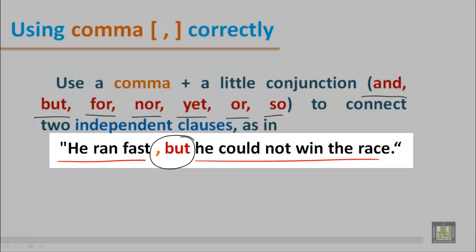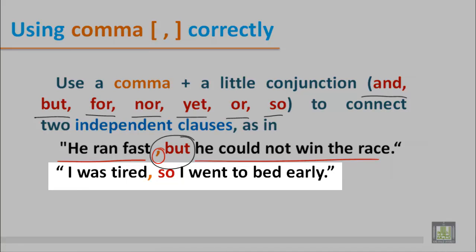There is another example: I was tired, so I went to bed early. In this following sentence, we can find two independent clauses: I was tired, I went to bed early. We can find the conjunction 'so,' and before 'so' we have used the comma.